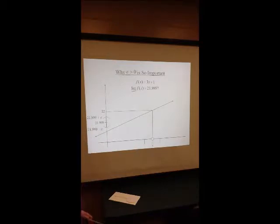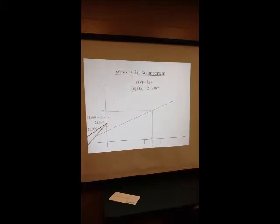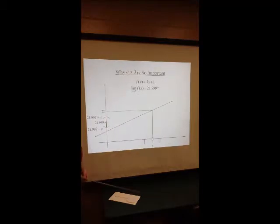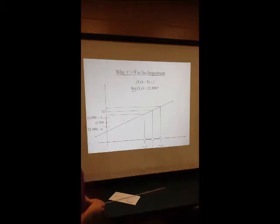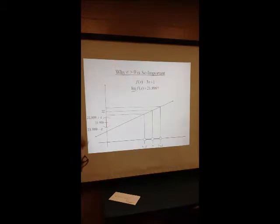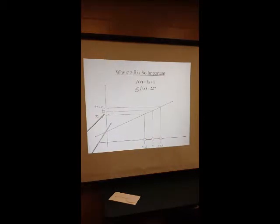We're trying to see if 21.999 is the limit. Now we have a smaller epsilon-neighborhood of 21.999, so in order for this to be the limit of f of x as x approaches 7, our delta-neighborhood of 7 must map into this epsilon-neighborhood. This time, our delta-neighborhood does not map into our epsilon-neighborhood of 21.999, proving that 21.999 is not the limit. In fact, this delta-neighborhood maps perfectly into an epsilon-neighborhood of 22, demonstrating that 22 is the limit of f of x as x approaches 7.